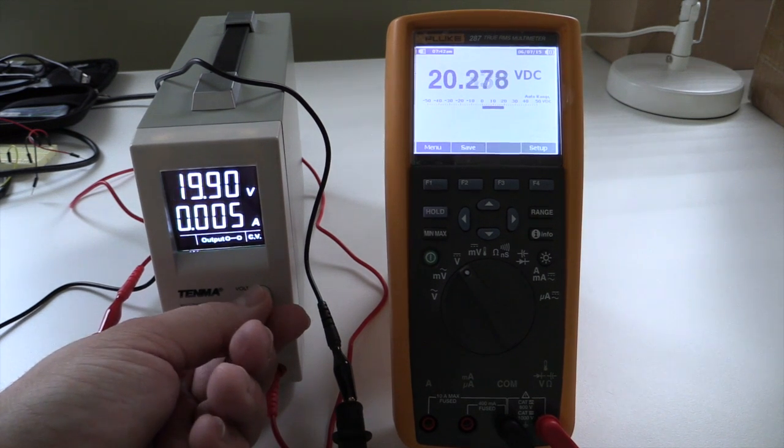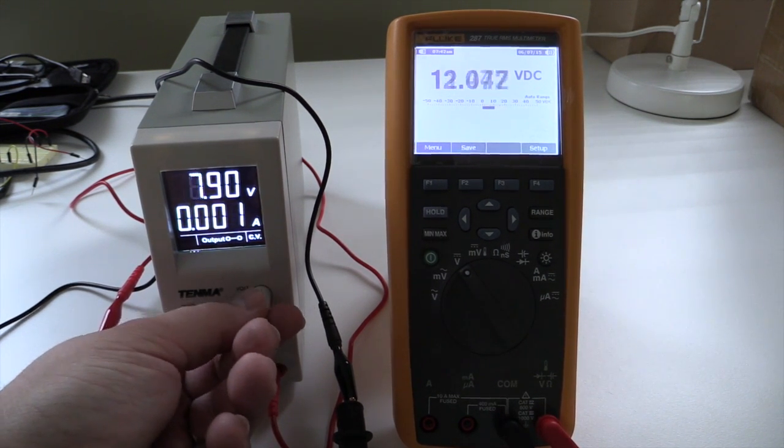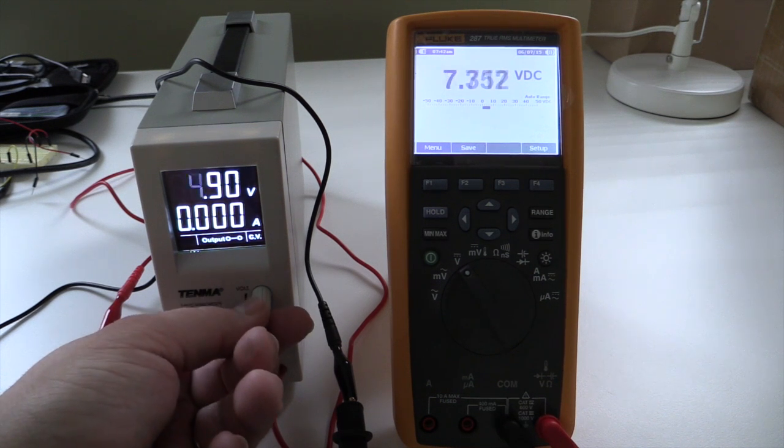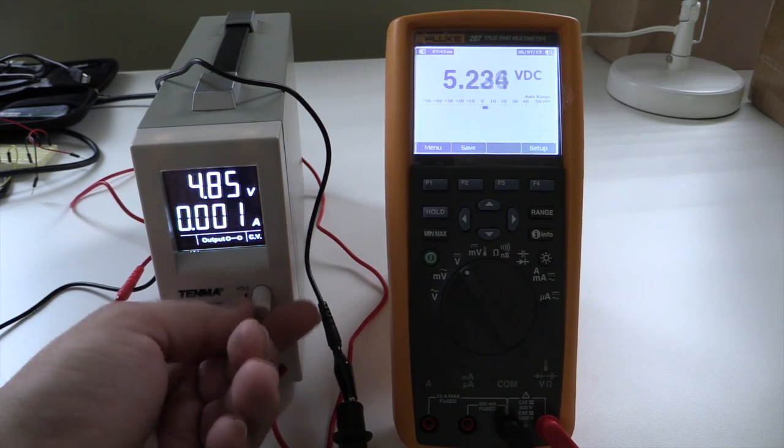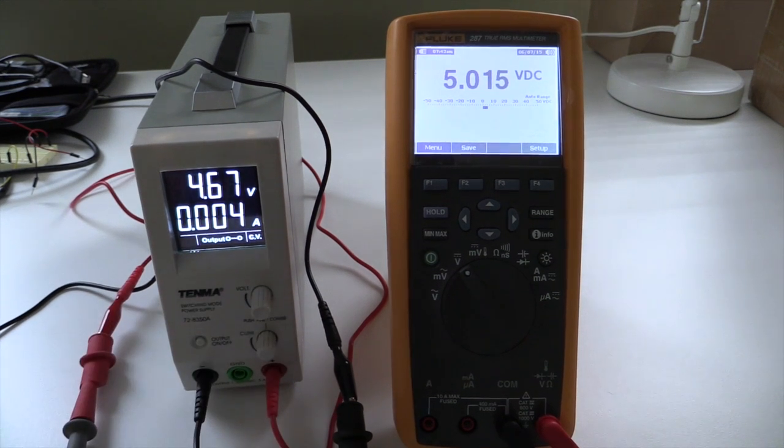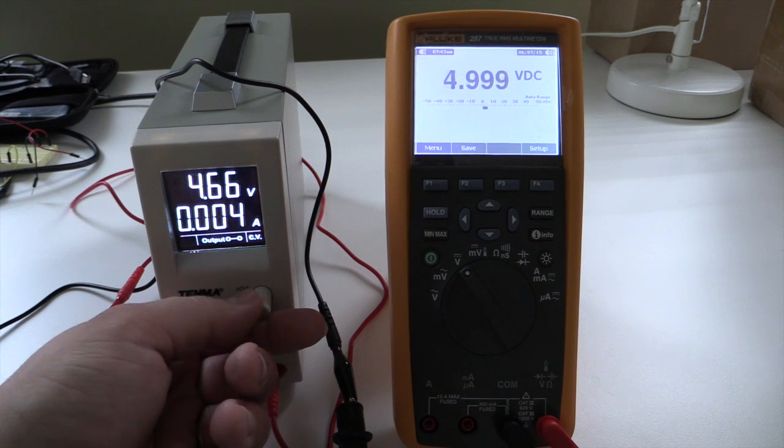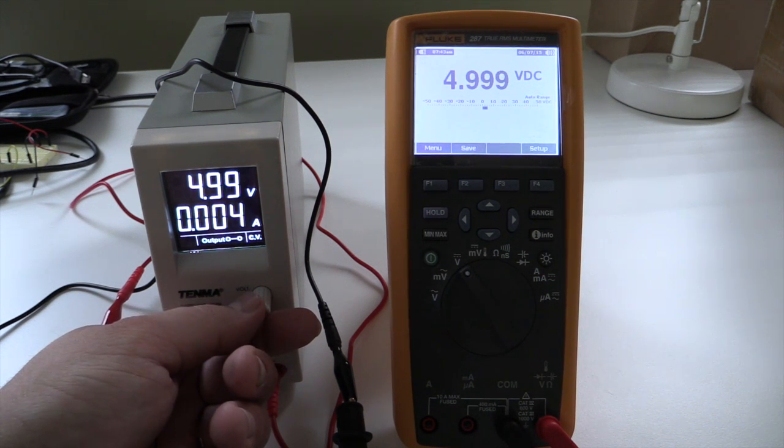So if, with this particular model, well I shouldn't say model, this particular sample, if I want 5 volts, I actually have to come in and set it on 4.67. Maybe that's a 4.66. Now I've got my 5 volts.